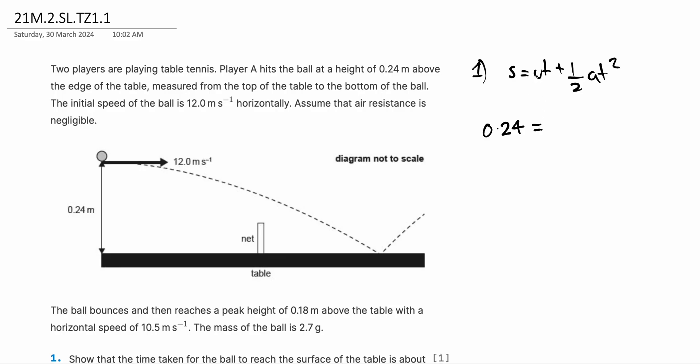We also know that there is no initial vertical velocity because it's having horizontal velocity initially, not vertical velocity. So that will be 0 times time, plus half the acceleration due to gravity, which is 9.81, and then T squared. So if we rearrange, we get 0.48 divided by 9.81, the root of gives us T. So T is about 0.22 seconds, which is approximately equal to 0.2 seconds. So that's our question one.